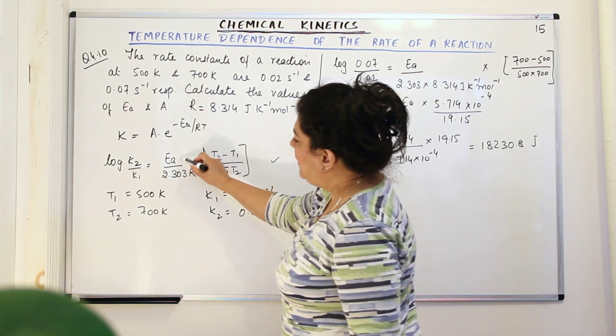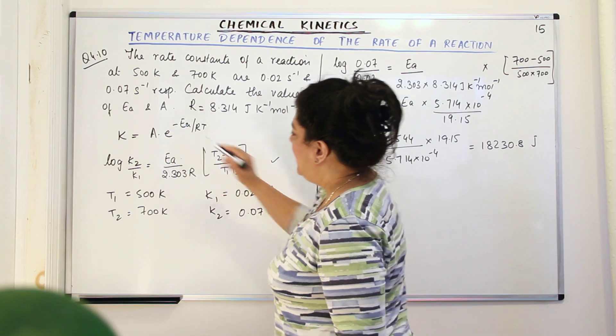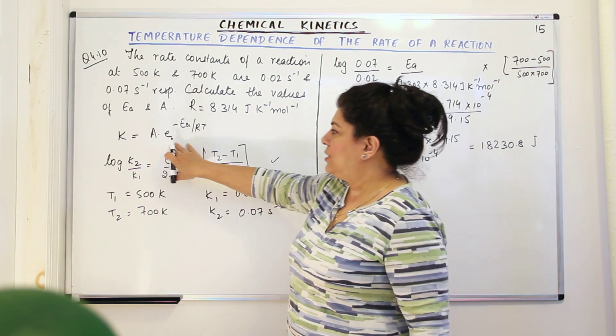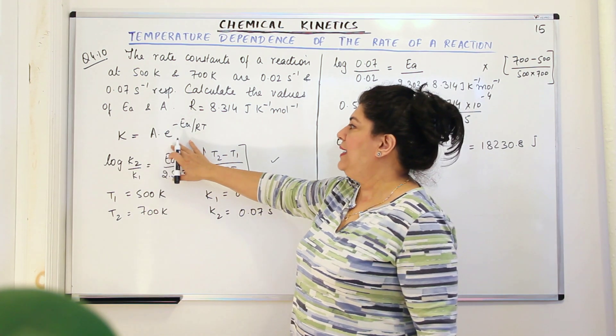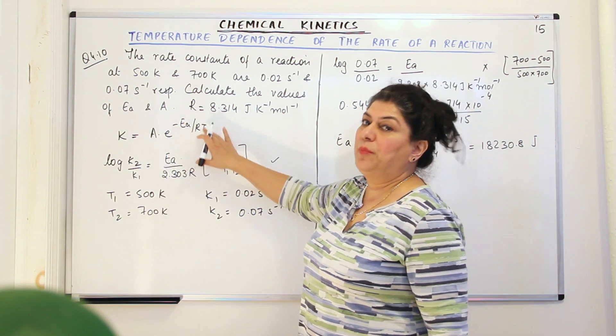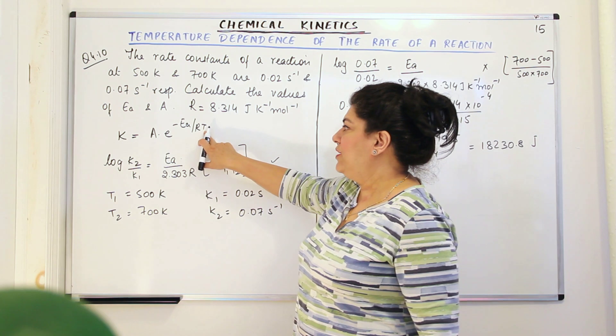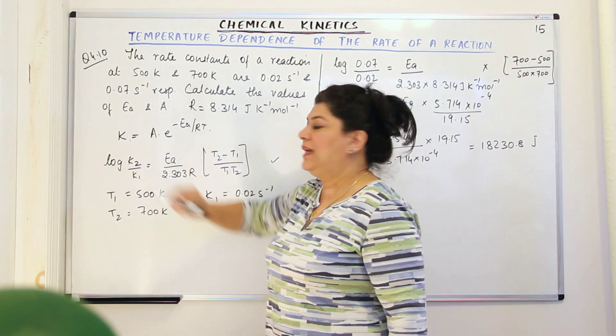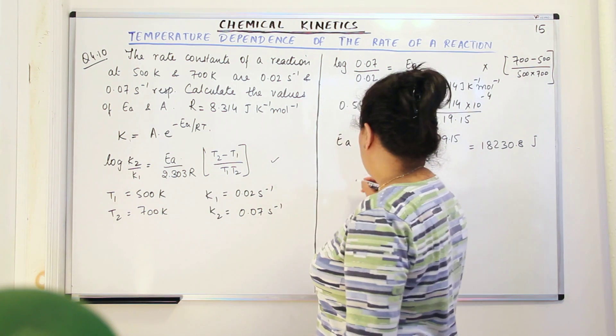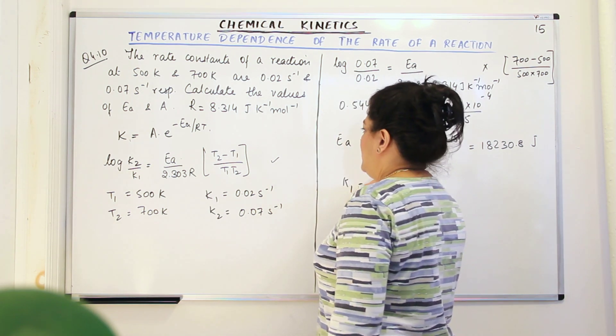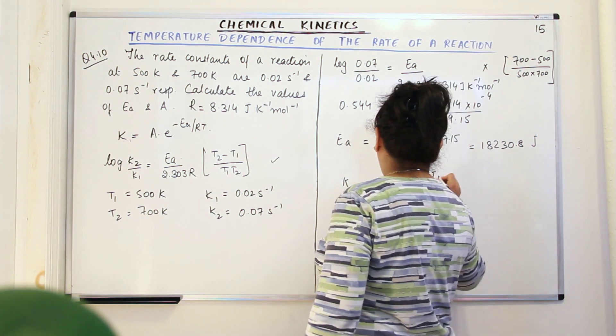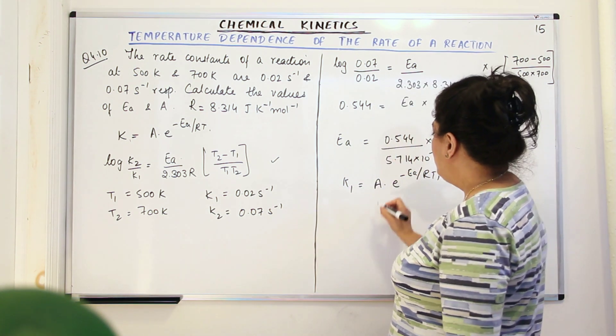And now, having got the value of Ea, you need to find out the value of A. So to find out the value of A, we know that K is equal to A E to the power of minus Ea upon RT. So let us take one of the temperatures, T1. At that temperature T1, K would be K1 and then apply this equation. So K1 is equal to A into E to the power of minus Ea upon RT1.